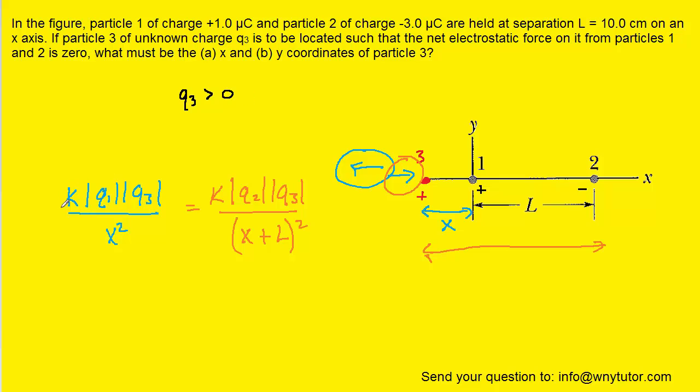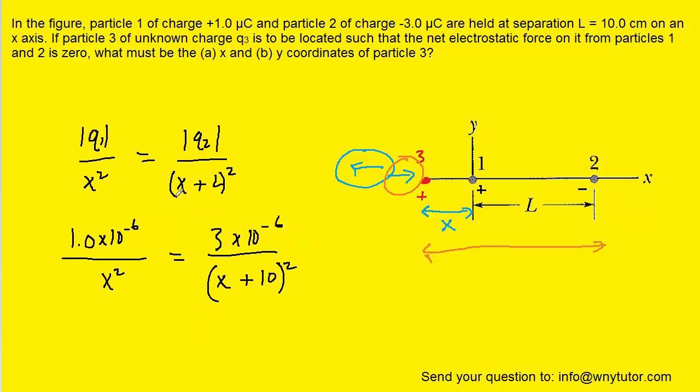So we'll have to substitute the values for q1 and q2 as well as the value for L. Notice that because of the absolute value around q2, we changed it from a negative to a positive value. We also converted the micro coulombs into coulombs by multiplying by 10 to the minus 6, but we can actually cancel out that multiplication by 10 to the minus 6 on both sides.